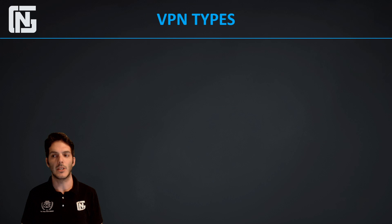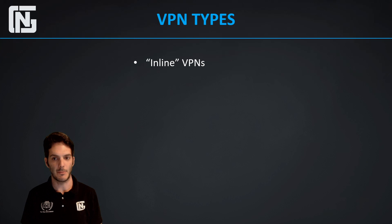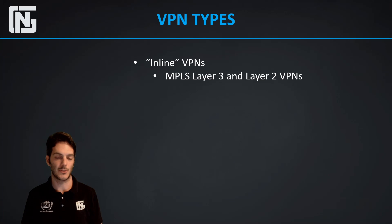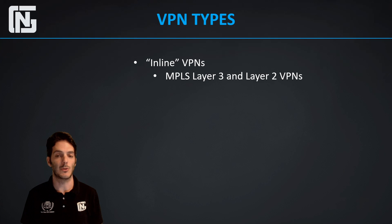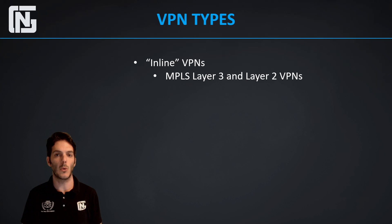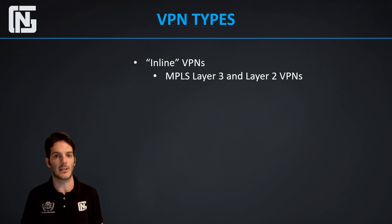Not all VPNs are created equal. The first type is inline VPNs, commonly referred to as MPLS layer 3 and layer 2. They are called inline because inside the layer 3 VPN you can see the provider's network — a trace route will show MPLS label switch values in the label path. Layer 2 VPNs are considered transparent, following the same ingress-to-egress provider edge router flow, but they overlay traffic inside the MPLS backbone so customer routers appear directly connected to each other.